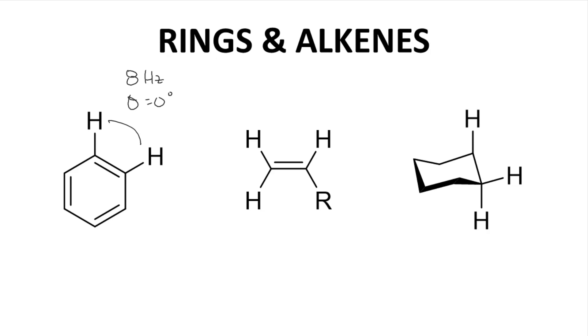For alkene hydrogens, let's focus on this CH on the right. This hydrogen has two neighbors. One is trans across the alkene. The other is cis. The dihedral angle of the trans hydrogen is 180 degrees. The cis one is zero degrees.